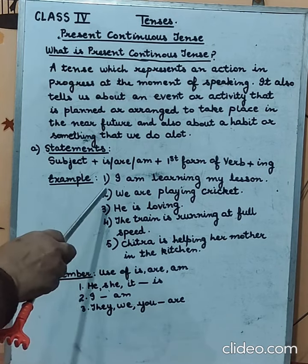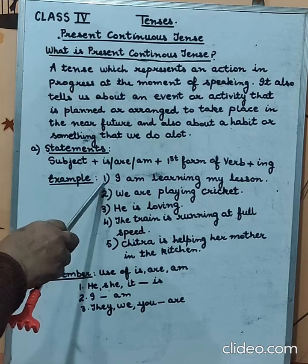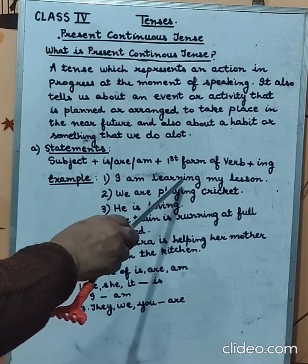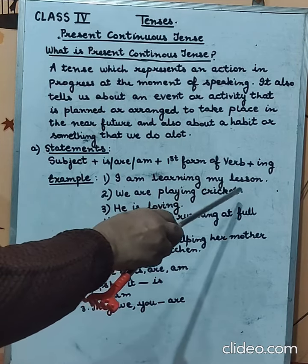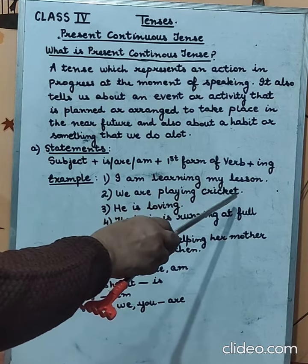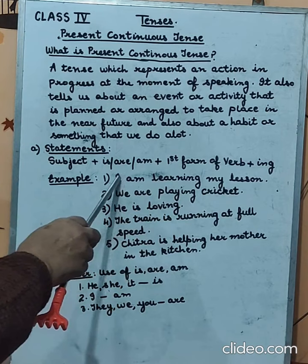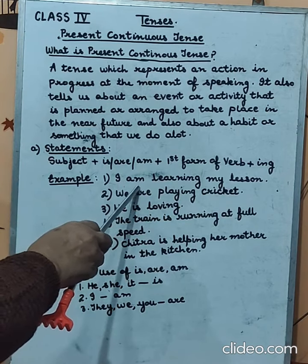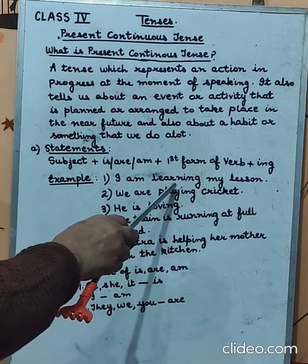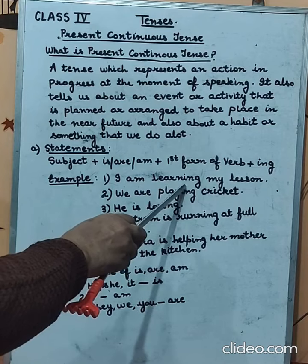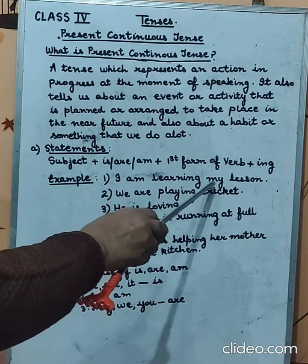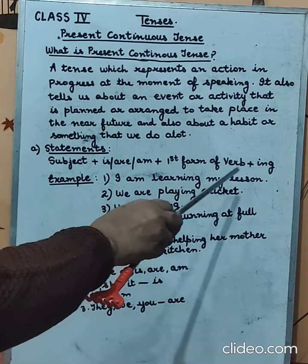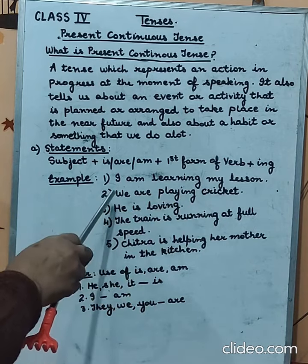Now look at the examples. Number one: I am learning my lesson. The subject is 'I', 'am' is the auxiliary verb, and 'learning' is the first form of verb plus -ing, followed by the rest of the sentence. So: I am learning my lesson.